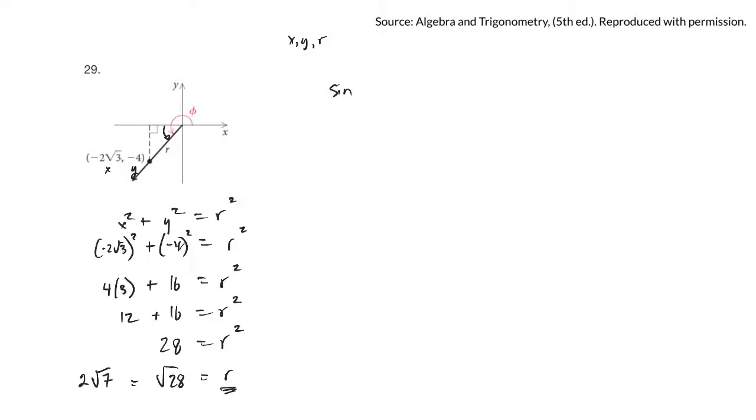So if they want to know all the trig ratios, I can start maybe with sine. Sine of that angle is going to be y over r, and y is negative 4 over r which is 2 root 7. We could leave it like that, but typically we don't want the root on the bottom.